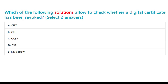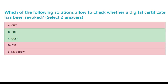Which of the following solutions allow you to check whether a digital certificate has been revoked? Select two answers. A. Cert. B. CRL. C. OCSP. D. CSR. E. Key Escrow. The correct answers are B. CRL and C. OCSP.